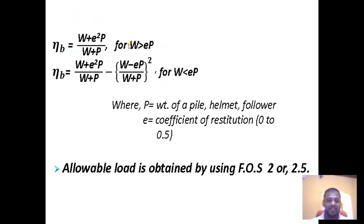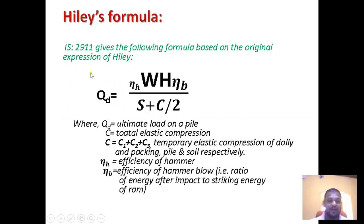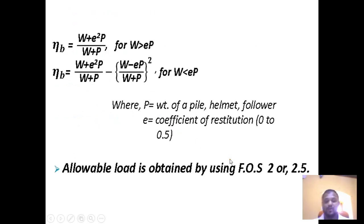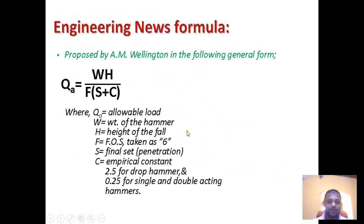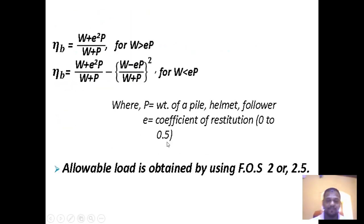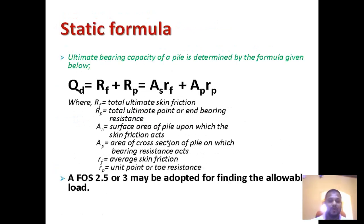The Hiley's Formula changes according to the situation. When W is greater than e × p, the formula remains as shown; when W is less than e × p, the formula changes, where p is the weight of pile helmet and follower, and e is the coefficient of restitution (taken as 0 to 0.5). Allowable load is obtained using a factor of safety of 2 to 2.5 for the Hiley's Formula, whereas for the Engineering News Formula a factor of safety of 6 is used.